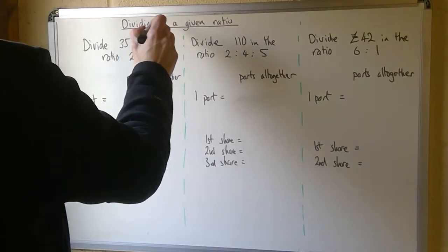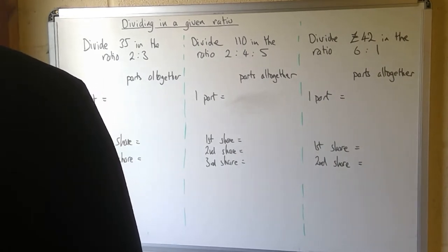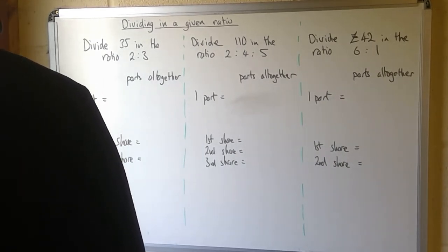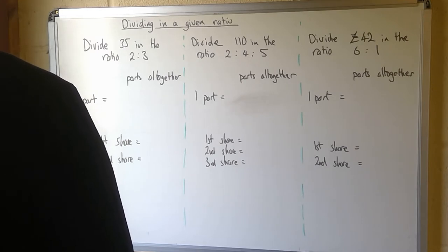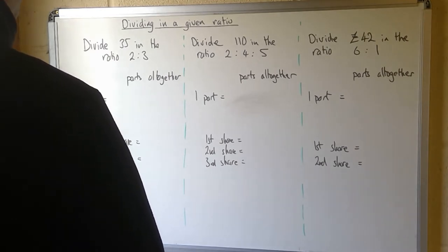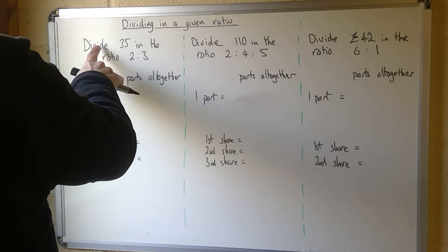Okay, today we're going to be dividing in a given ratio. This is one of the main skills involving ratio and what it allows us to do is divide an amount into uneven shares. Whereas if we were just dividing 35 between two people, you'd get 17.5, but using a ratio allows it to be shared in a different way.